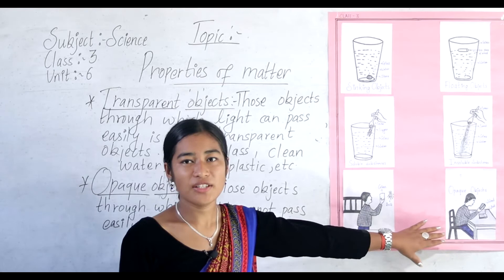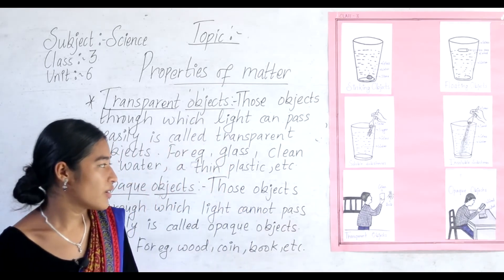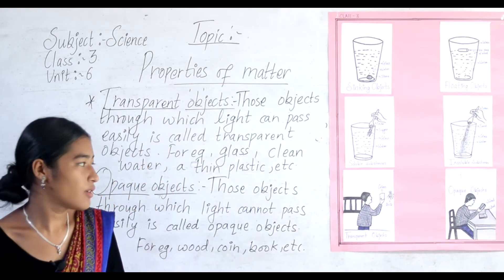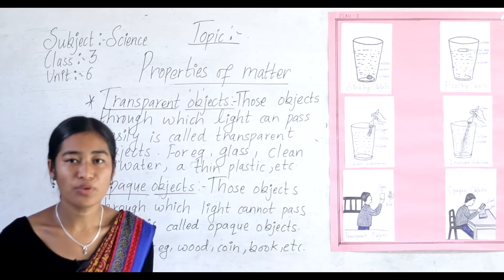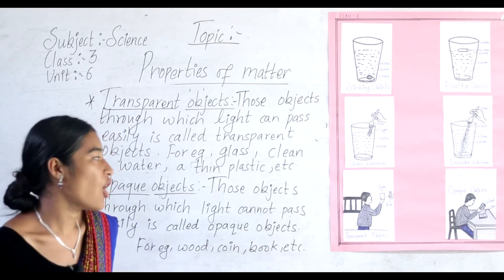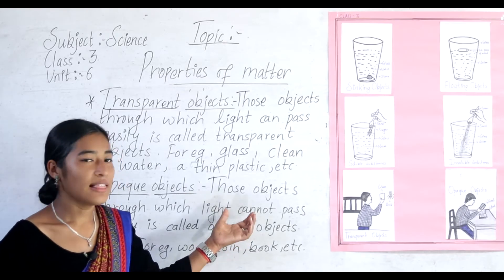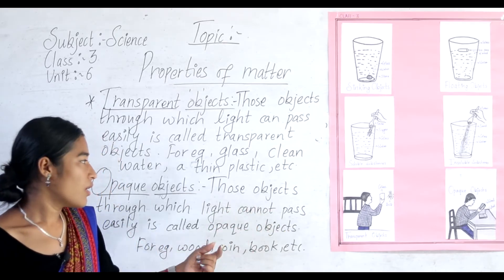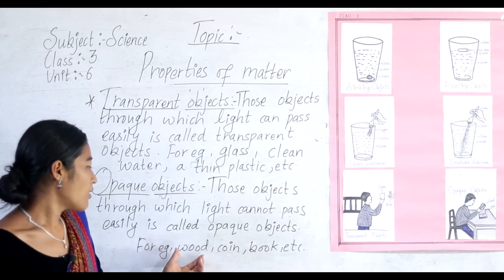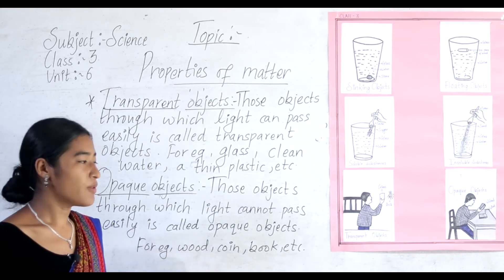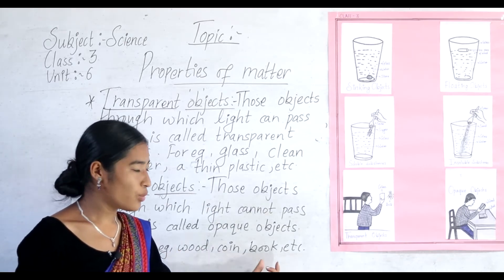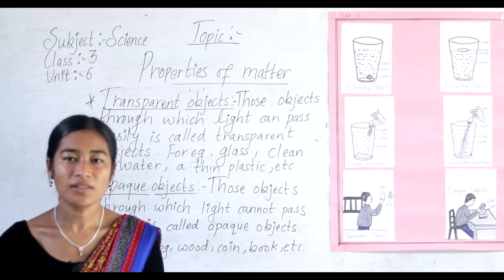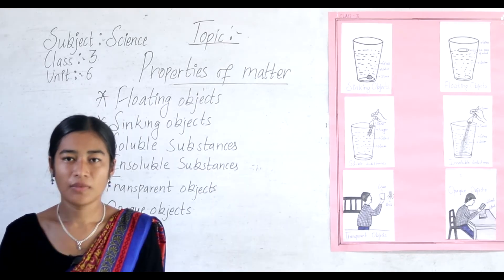You can see in the chart here — there is a boy trying to look at a book through a piece of wood, but he cannot see the book because wood is an opaque object, through which light cannot pass easily. So a piece of wood is an example of an opaque object. Coins, books, and desks are also opaque objects.